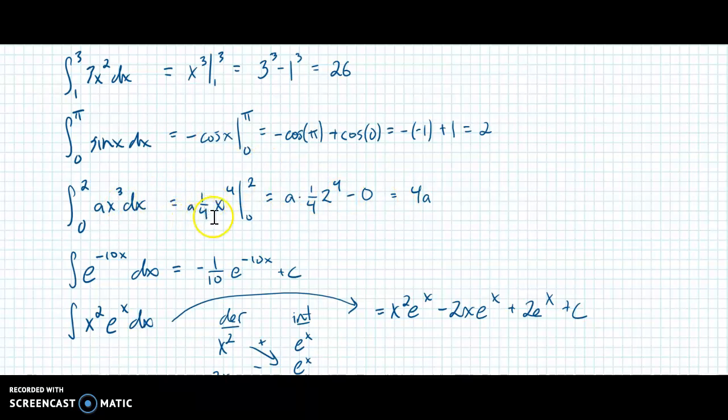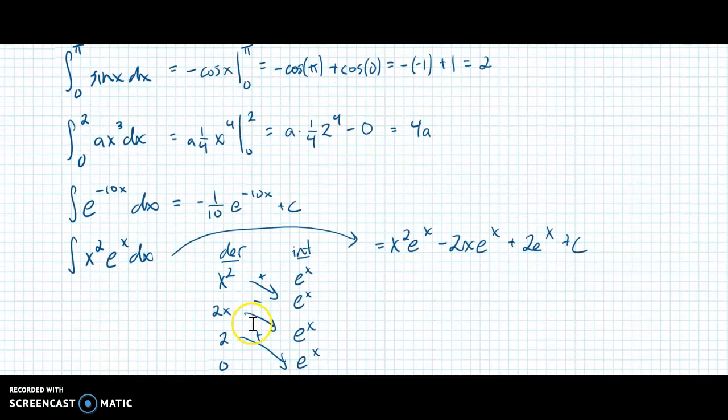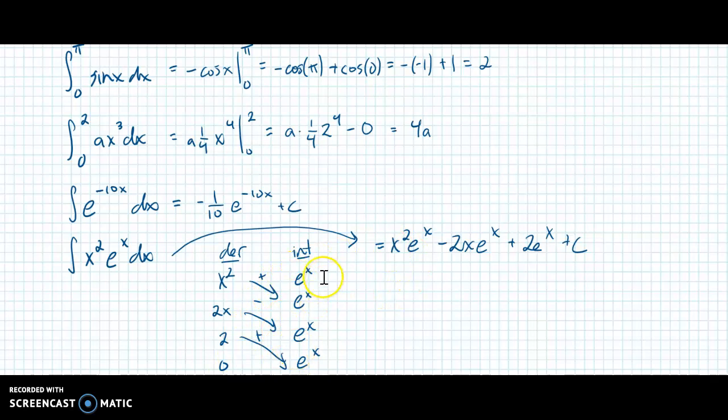This one right here, remember a is a constant. So it's a times one fourth x to the fourth evaluated from zero to two, which is a times this, which gives me four a, I think. E to the negative 10x integrates to one tenth e to the negative 10x plus a constant. This one is not a definite integral. And this one, I have to use some integration by parts, which should be pretty good with at this point. And don't forget your alternating signs.